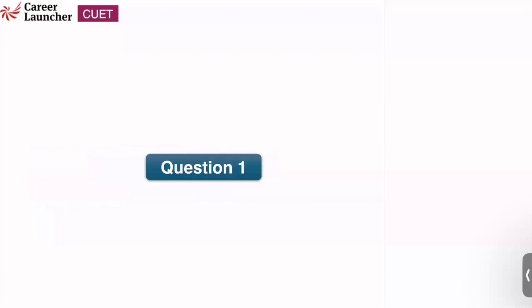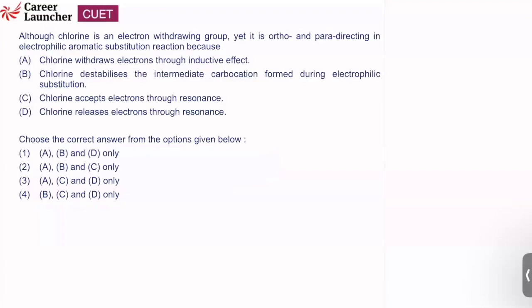Question number one. Although chlorine is an electron withdrawing group, it is ortho and para directing in electrophilic aromatic substitution reaction. Option A says chlorine withdraws electrons through inductive effect — that is correct, because chlorine is a minus-I group, so it withdraws electrons. Option B: chlorine destabilizes the intermediate carbocation in electrophilic substitution — that is also correct, since it is an electron withdrawing group, it destabilizes the carbocation.